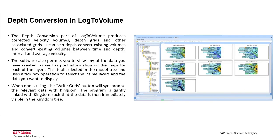You can also perform depth conversion in Log2Volume. The depth conversion part produces corrected velocity volumes, depth grids, and other associated grids. It can also depth convert existing volumes and convert existing volumes between time and depth, interval and average velocity. The software also permits you to view any of the data you have created, as well as post information on the maps for each of the layers.